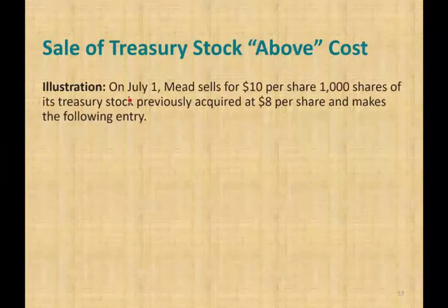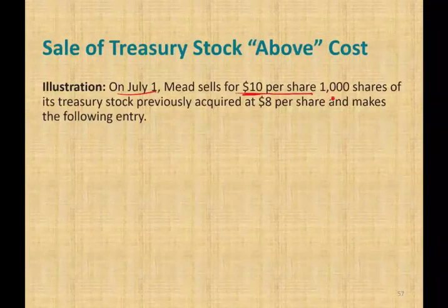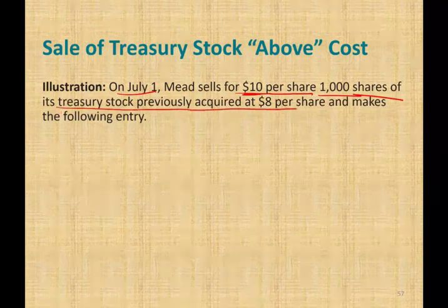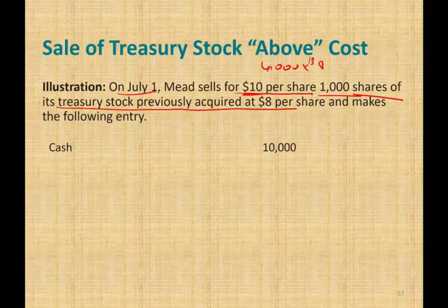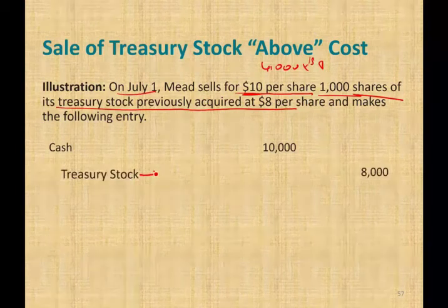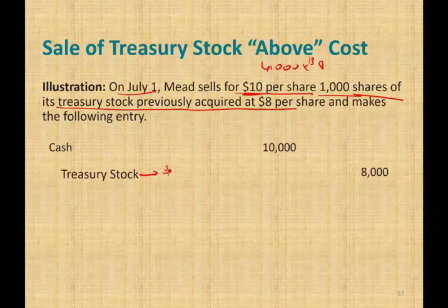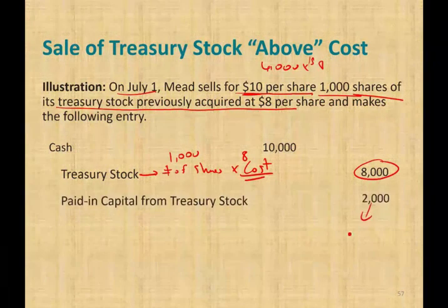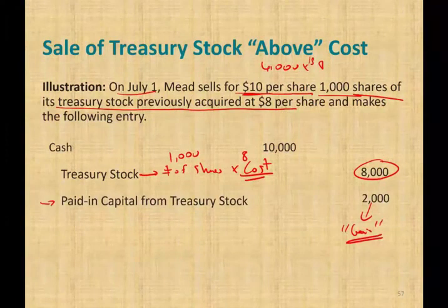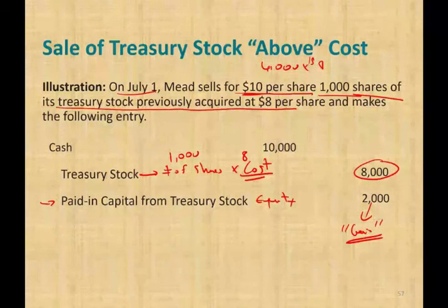On July 1st, Mead sells 1,000 shares of its treasury stock — previously acquired at $8 — for $10 per share. We debit cash $10,000. We credit treasury stock for the number of shares times cost: 1,000 × $8 = $8,000. The difference of $2,000 cannot be called a gain because it cannot go on the income statement. So we credit an equity account called paid-in capital from treasury stock for $2,000. A corporation does not realize a gain or suffer a loss from transactions with its own stockholders.